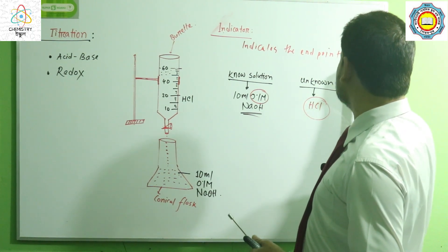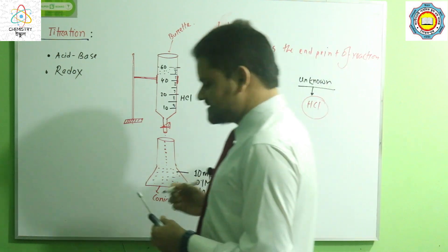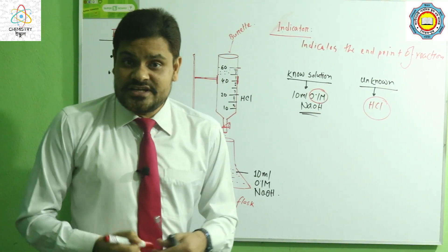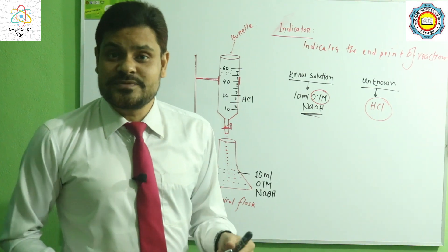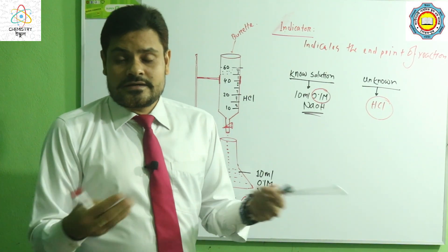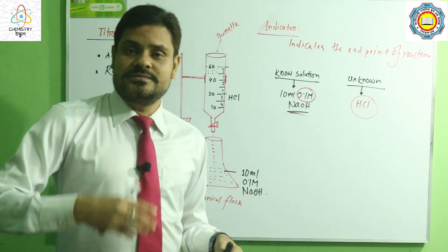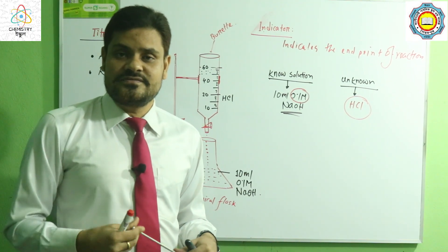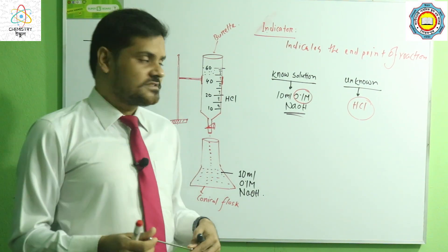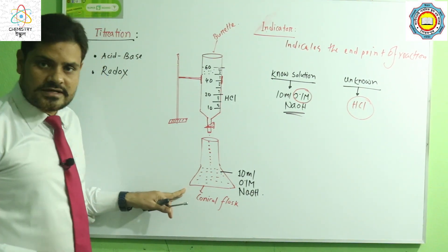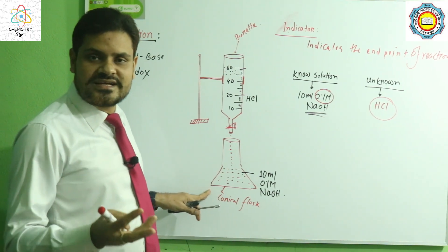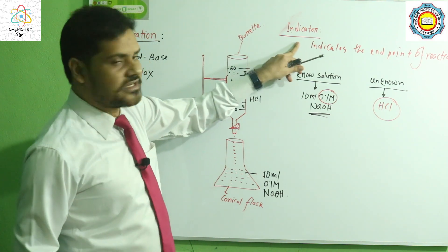We know that there are some indicators. The most commonly used indicator is litmus paper, which you know very well — it tells whether the solution is acidic, basic, or neutral. But here we use another substance which is made from a weak acid or weak base. This is called the indicator.